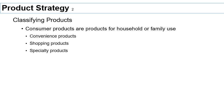Number two is shopping products. These are products that people spend a significant amount of time searching for information on — looking at products available online, asking friends and family, or going to a store and looking at what's on the shelf. Those are all information-search strategies. Then after that, you spend a fair amount of time thinking about which product to buy.